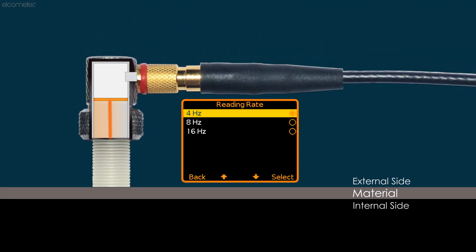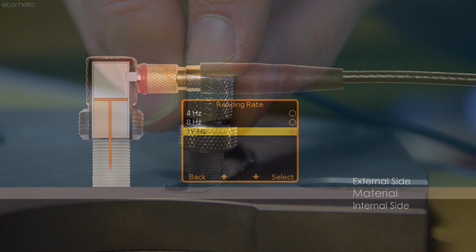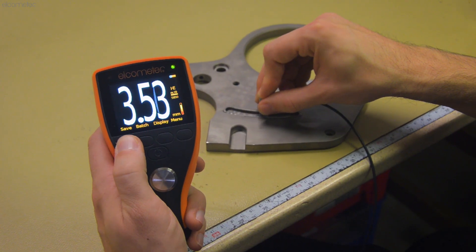The Elcometer PTG range has user selectable measurement rates of up to 16 readings per second, or 16 hertz, ideal for quickly scrubbing across a surface, recording multiple measurements.